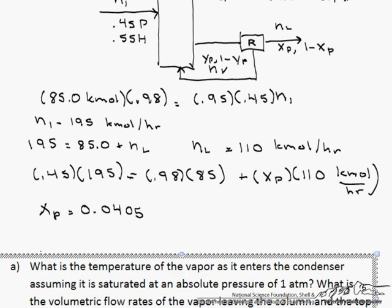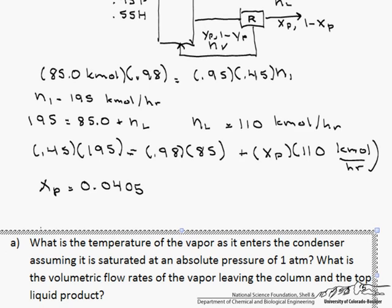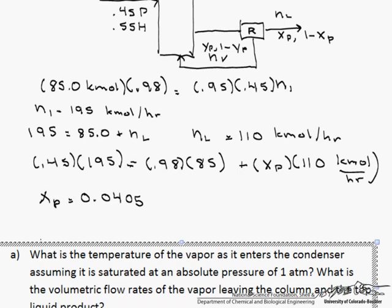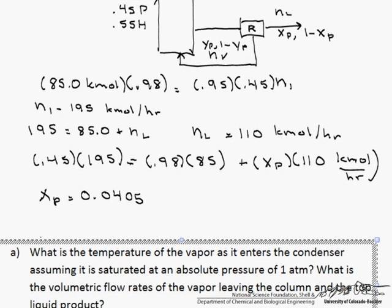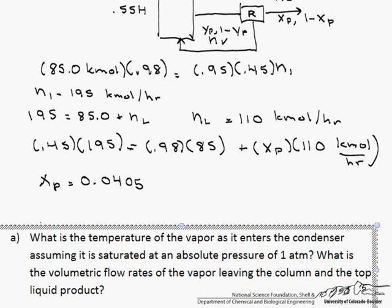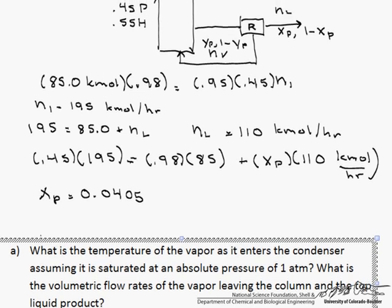The next thing that we are asked to do is to find the temperature of the vapor as it enters the condenser, assuming it is saturated. As soon as you see those words, it is saturated, it should tell you that you should be using Raoult's Law at an absolute pressure of 1 atmosphere, and then we need to find the volumetric flow rates of the vapor leaving the top liquid product. So let's start with the temperature of the vapor as it enters the condenser, and that is that 170 kilomoles.